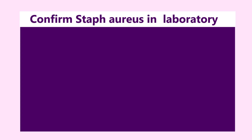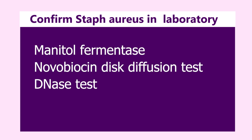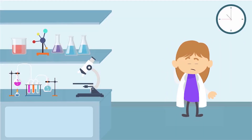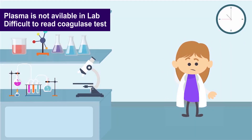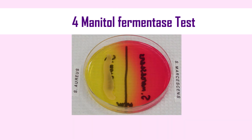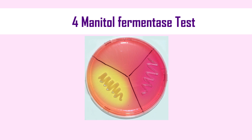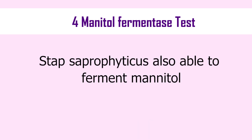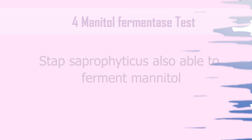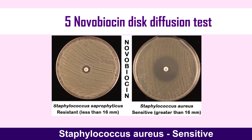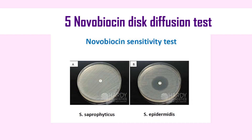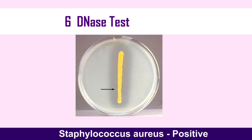However, we can further confirm Staphylococcus aureus using the mannitol fermentation test, novobiocin sensitivity test, and DNase test — especially when plasma is not available or the coagulase test is difficult to interpret. Staphylococcus aureus is able to ferment mannitol and change the red-colored plate to yellow. Staphylococcus aureus also gives sensitive results on the novobiocin sensitivity test, as does Staphylococcus epidermidis. Additionally, Staphylococcus aureus gives a positive DNase test.